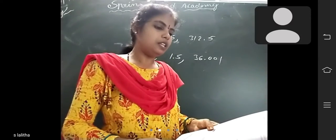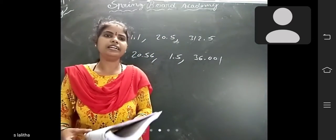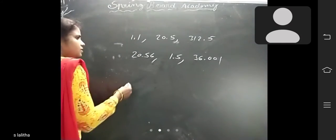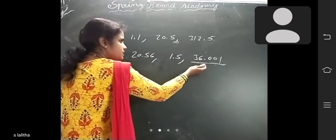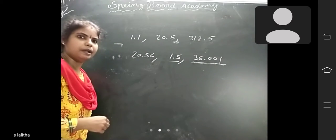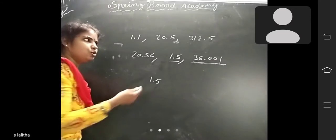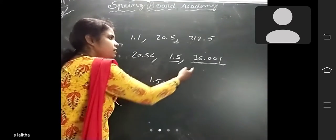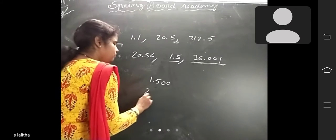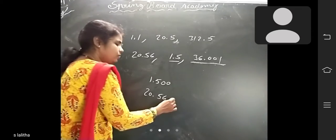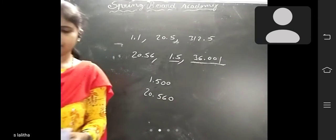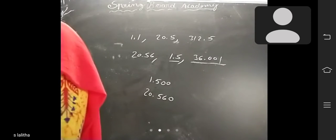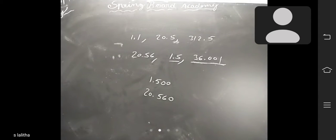Unlike decimals means a different number of digits after the decimal point. For example: 20.56, 1.5, 36.001 — after the decimal point there are 2 digits, 1 digit, and 3 digits respectively. All are different, so these are called unlike decimals. To convert unlike decimals to like decimals, you keep zeros on the right side of the number to make digit counts equal.